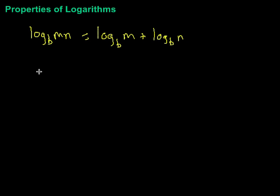The second property I want to look at is called the quotient property. And in that property, if we have the log base b of m over n, that's equal to the log base b of m minus the log base b of n. And again that could be used in either direction. Many times we'll have logarithms which are being subtracted. We can simplify them by doing that division.